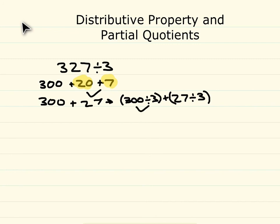Well, 300 divided by 3 is 100 and 27 divided by 3 is 9. Add your two parts together and you get 109. So your quotient for 327 divided by 3 is 109.